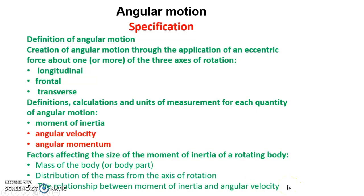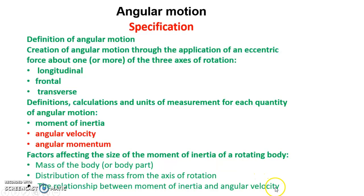This bit here is absolutely vital for the next part of this screencast. It's having a good understanding that if a moment of inertia is high, then the angular velocity will be low and vice versa. That's really important — we really got that concept last lesson.